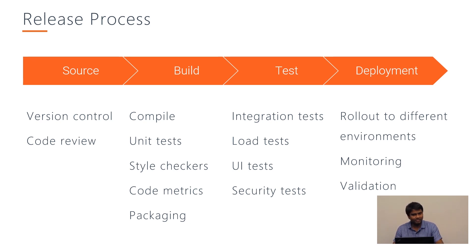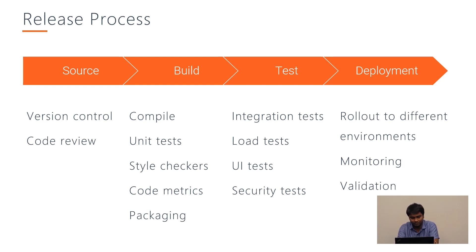A software release process usually consists of four stages: source, build, test, and deployment. It is used to control the deployment of software into various environments. The environment can be staging, deploy, production, or even the QA environment.